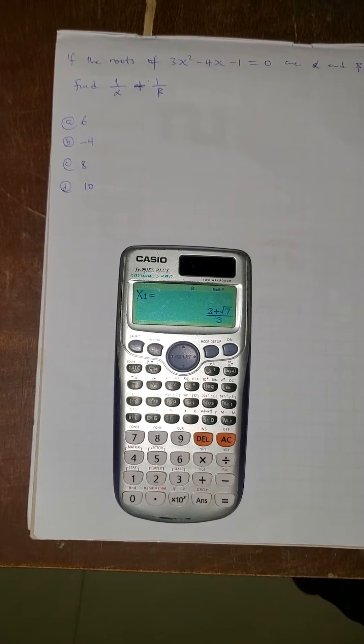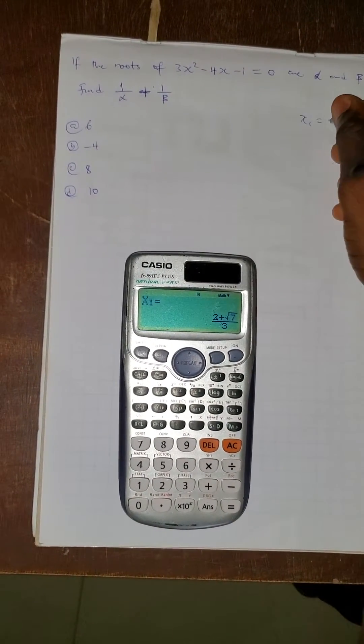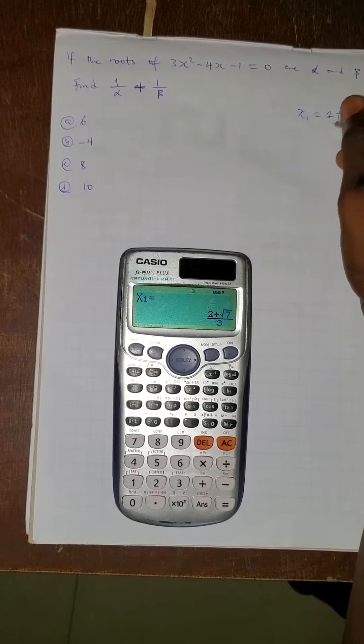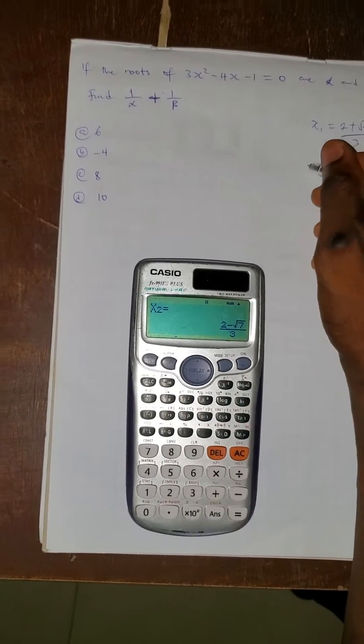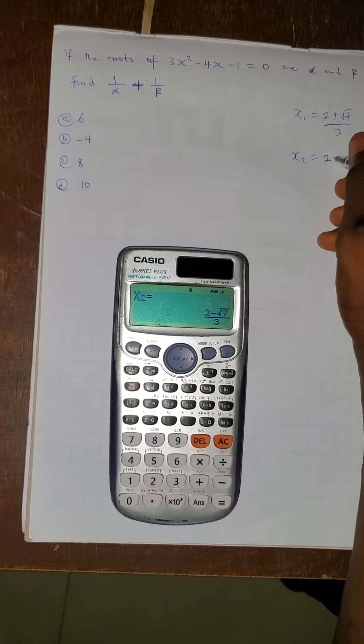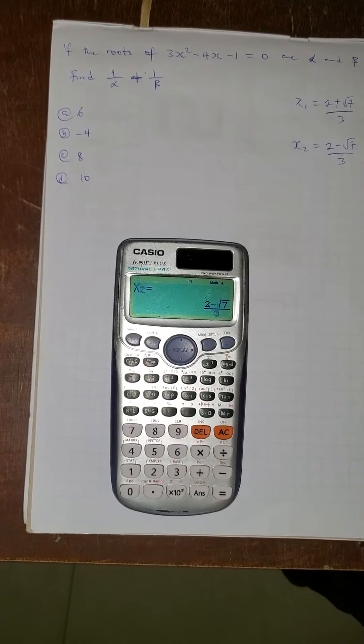We press equals to again. Our x1 is 2 plus root 7 over 3. We press equals to again. Our x2 is 2 minus root 7 over 3.